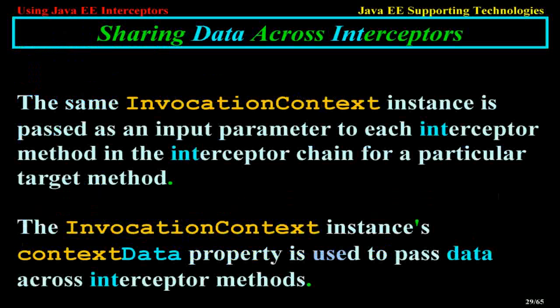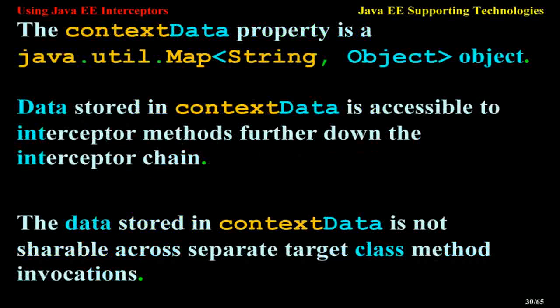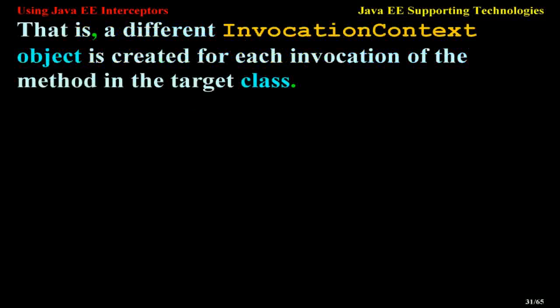Sharing data across interceptors: the same invocation context instance is passed as an input parameter to each interceptor method in the interceptor chain for a particular target method. The invocation context instance's context data property is used to pass data across interceptor methods. The context data property is a java.util.Map<String, Object>. Data stored in context data is accessible to interceptor methods further down the interceptor chain, but is not shareable across separate target class method invocations — a different invocation context object is created for each invocation of the method in the target class.